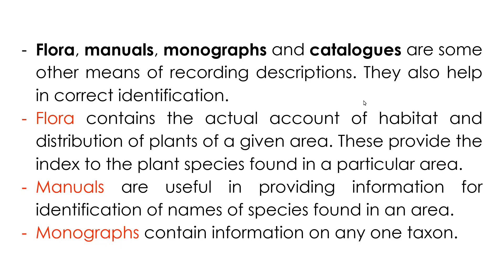To summarize: flora gives you the total number, variety, and distribution of plants in a particular area; manual gives an idea of the different variety of species — animal or plant — in that area; and monograph gives information about only one taxon. I hope you understood the taxonomical aids. We'll meet again in the next class with a new chapter. Keep studying — God bless you all, thank you very much.